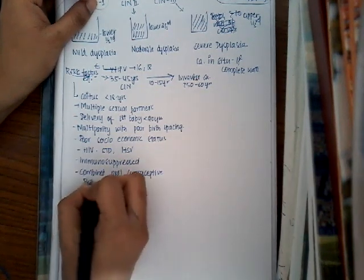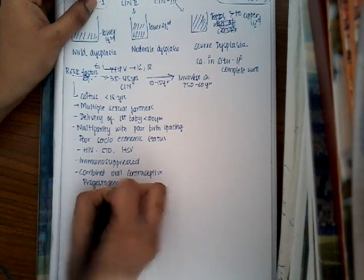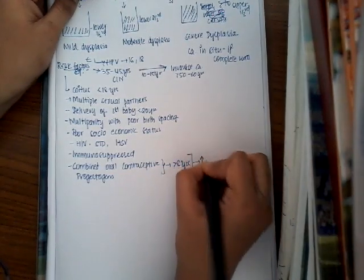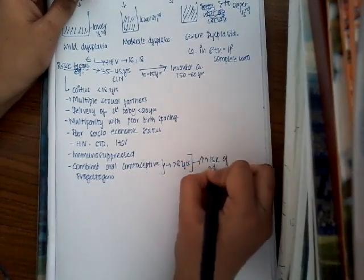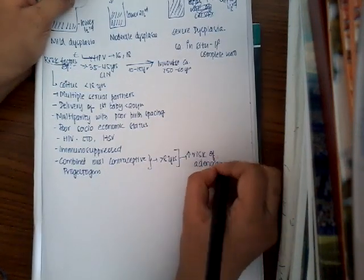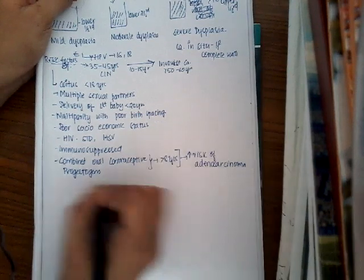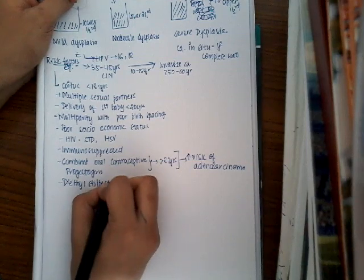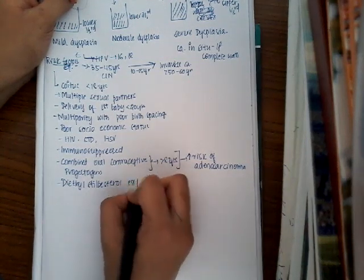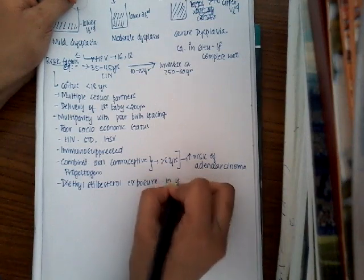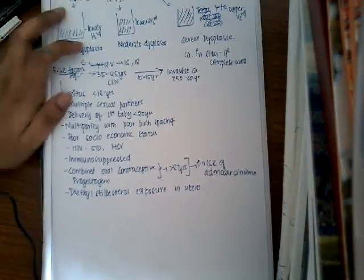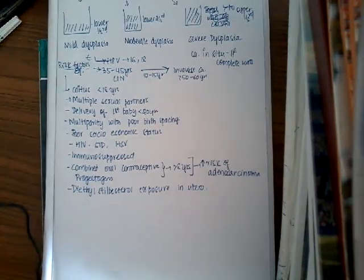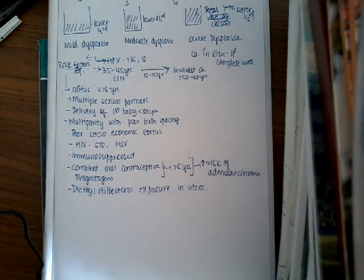Use of combined oral contraceptives or progestogens for more than eight years increases the risk of adenocarcinoma. Additionally, diethylstilbestrol exposure in utero — in the baby, not the woman — can also cause cervical cancer. These are the different risk factors for cervical intra-epithelial neoplasia.